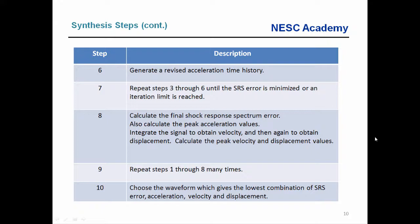Step nine is to repeat steps one through eight many times — for this class example 75 times, but if you have a tough spec you might want to do 2,000 trials. Then we go through a ranking process to rank these waveforms in terms of their SRS error — the two error parameters as well as the three amplitude metric parameters — using the weighting factors to choose the one that gives the best overall rank.